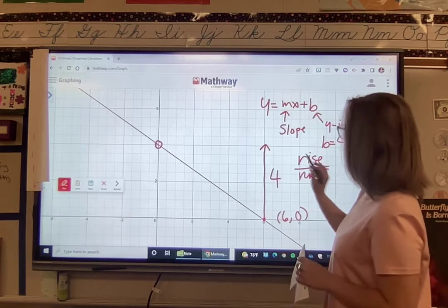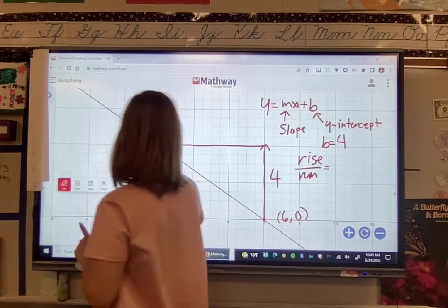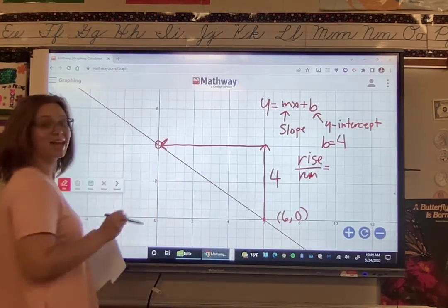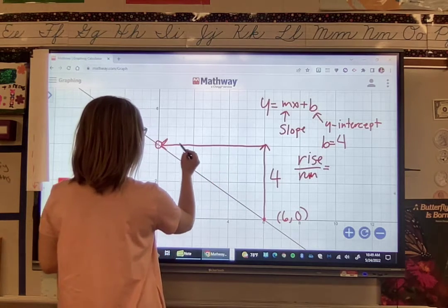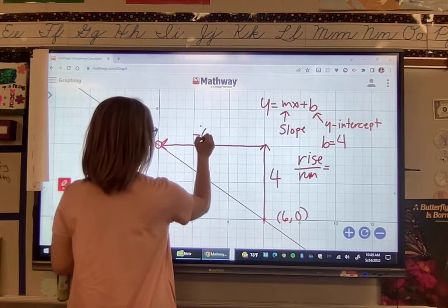And then run, which is going to the left, so that means that it's going to be negative. So that makes the run 1, 2, 3, 4, 5, 6. Negative 6.